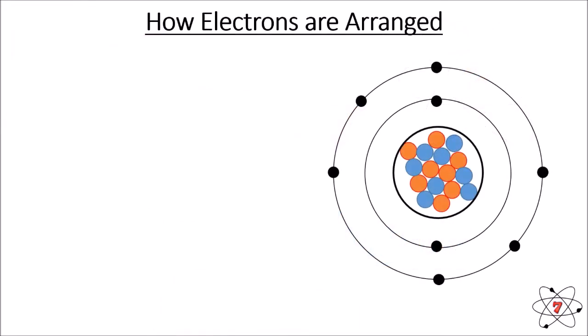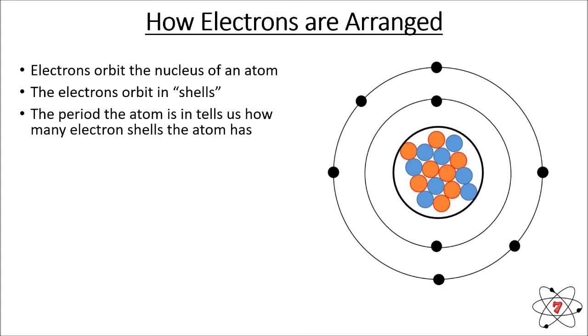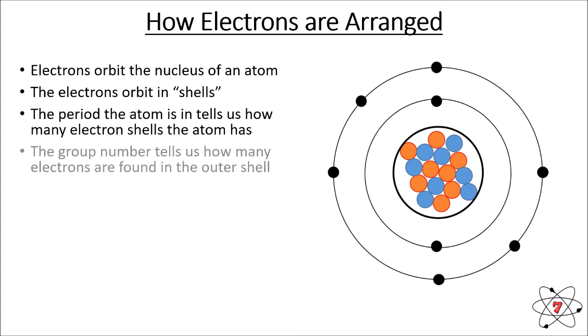So we've got our oxygen from last lesson and we need to understand in more detail how electrons are arranged. A reminder: electrons orbit the nucleus of an atom in shells. Oxygen has two electron shells. It's really important to note that the period an atom is in tells us how many electron shells it has. Hydrogen and helium are in period one, so they have one electron shell. Oxygen is in period two, so has two electron shells.